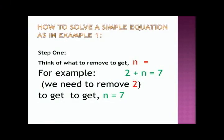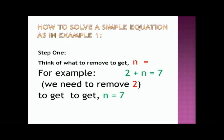Now boys and girls, we are going to look at the steps that can help you to solve this problem. Step one: think of what to remove to get N equal. For example, in the problem we had, two plus N equals seven. If we are to get N equal, in this situation it would be N equal seven. So, what do we need to get rid of? We need to remove the two.